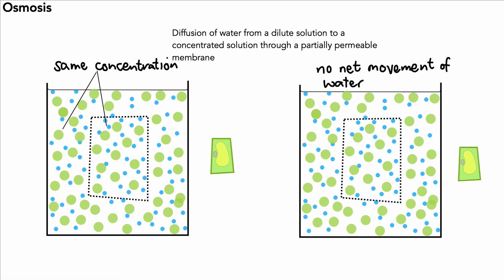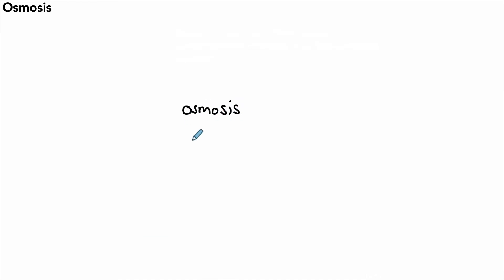There's no net movement of water through osmosis because the two concentrations are the same. So this is the idea of osmosis and a couple of examples where you could explain what's going on with osmosis. Let's have a look at where we might see some other examples.